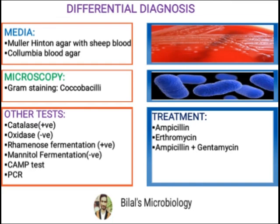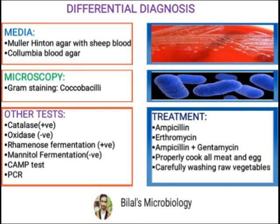For precautions, since we can get Listeria monocytogenes from dairy products, you should properly cook meat and eggs. Secondly, you should properly wash raw vegetables. Most importantly, since Listeria monocytogenes can be found in milk, you should properly pasteurize or heat milk. This covers the introduction, conditions and diseases, diagnosis, and treatment of Listeria monocytogenes.